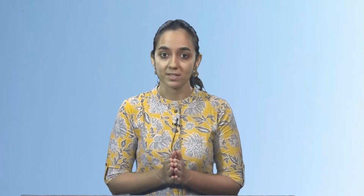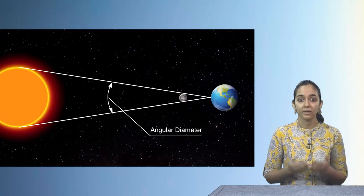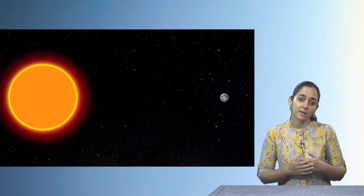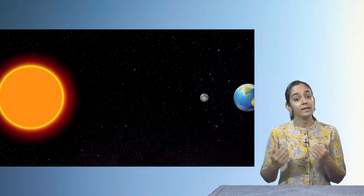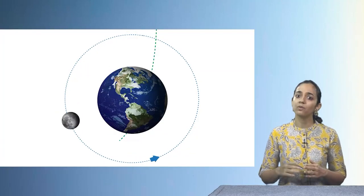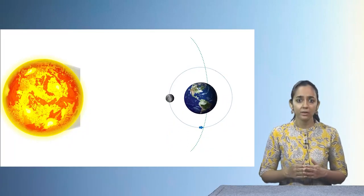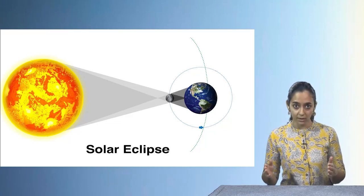Now that we know about the structure of the sun and the fascinating activities on its surface, we can talk about why eclipses happen. Scientists take the opportunity of a solar eclipse to study the corona. The angular diameter of the sun and the moon as observed from the earth is equal — even though the sun is much bigger, it is much farther away, so they occupy equal space in the sky. The moon revolves around the earth, and the earth revolves around the sun, so occasionally the moon gets positioned between earth and sun, causing an eclipse.